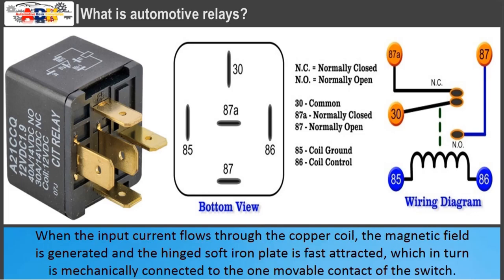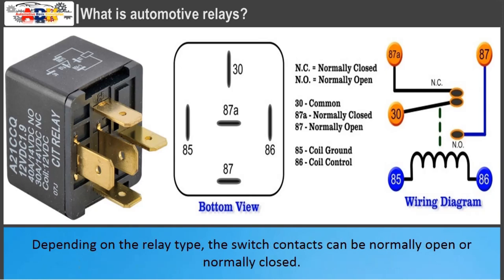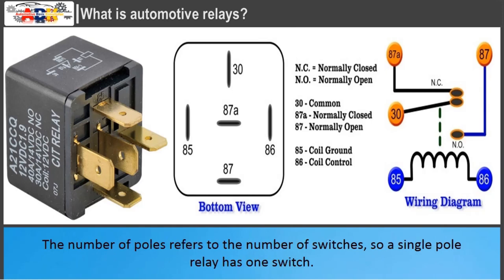When the input current flows through the copper coil, the magnetic field is generated and the hinged soft iron plate is fast attracted, which in turn is mechanically connected to the one movable contact of the switch. The other contact of the switch is non-movable, placed at very short distance next to the movable contact. Depending on the relay type, the switch contacts can be normally open or normally closed. The number of poles refers to the number of switches, so a single-pole relay has one switch.